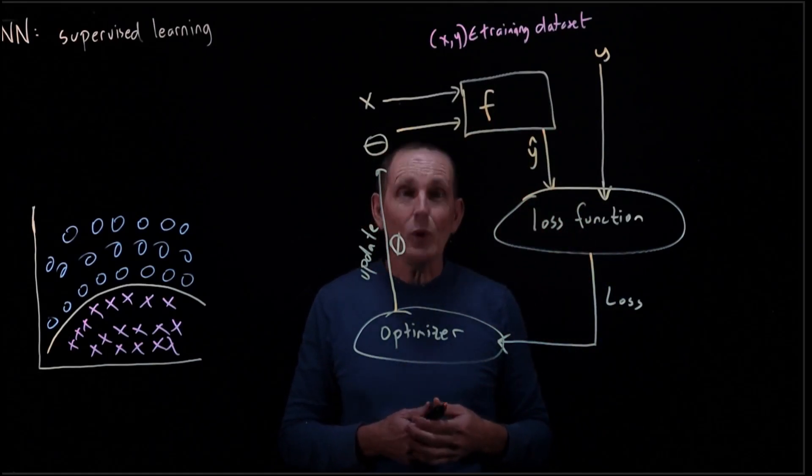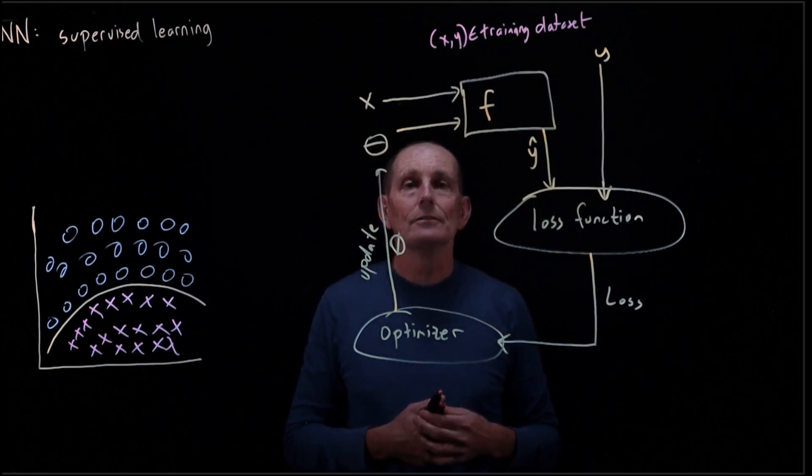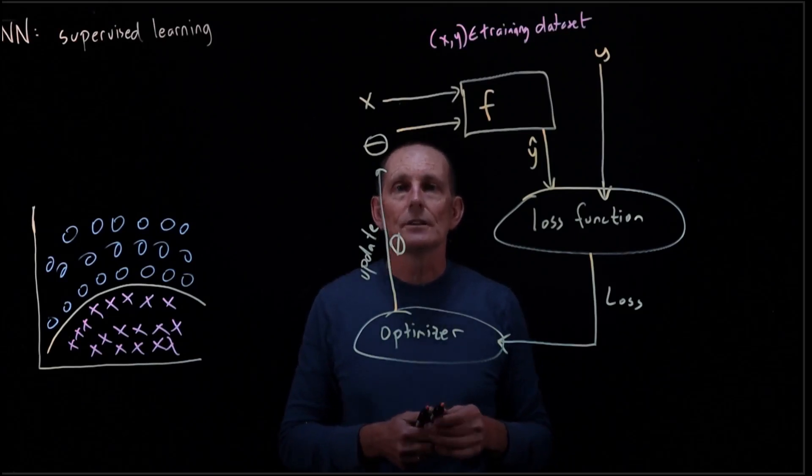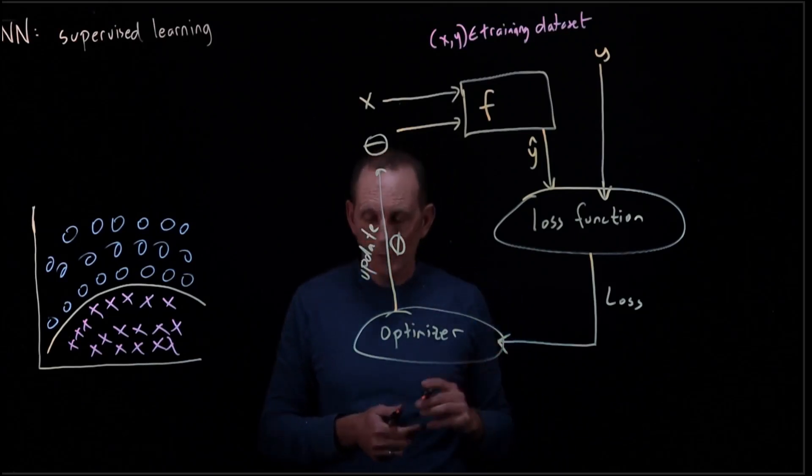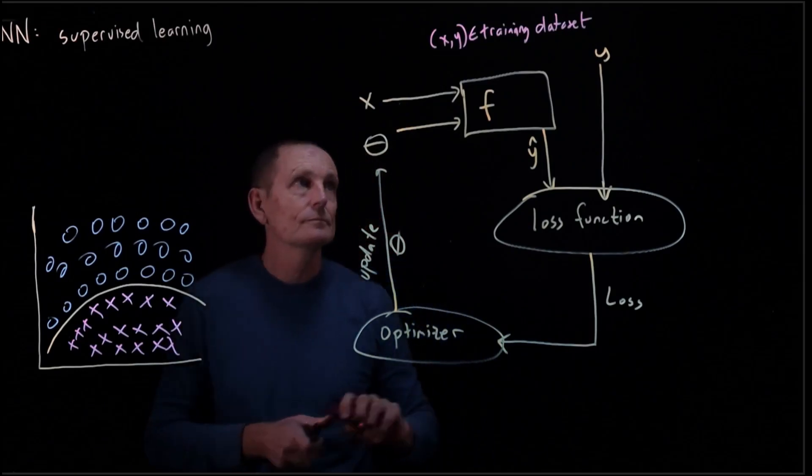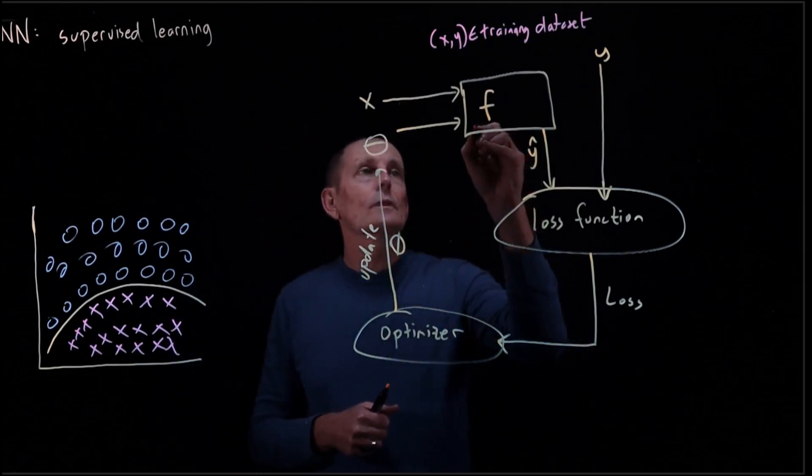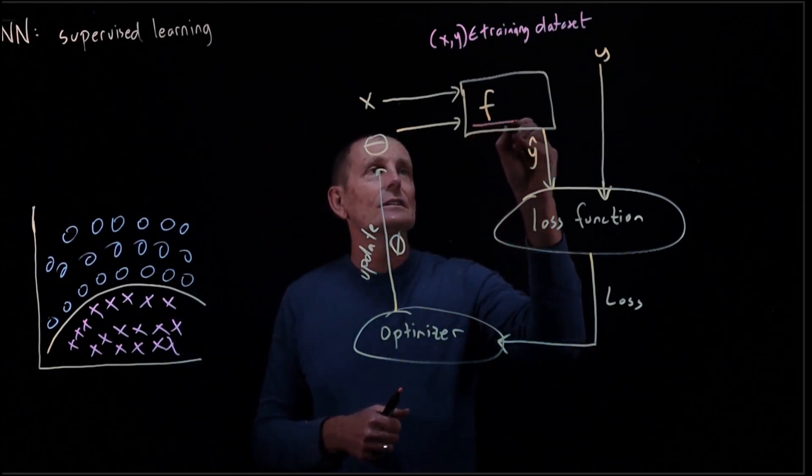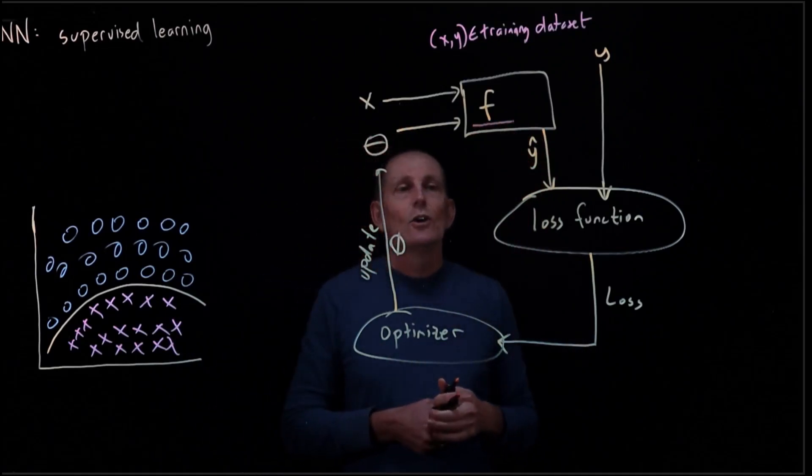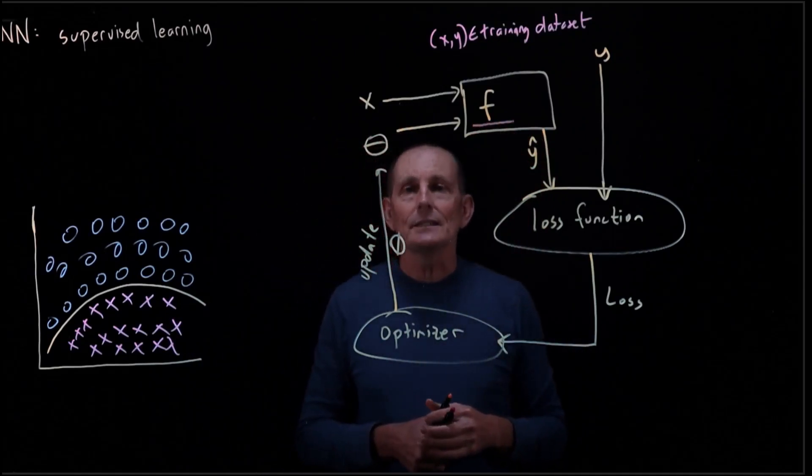Now, we have a lot of control over various things as we're designing this. We get to decide F. In particular, we get to decide what kinds of inputs it takes.